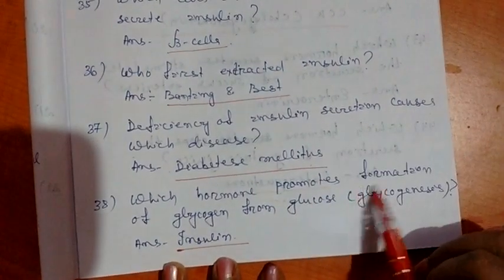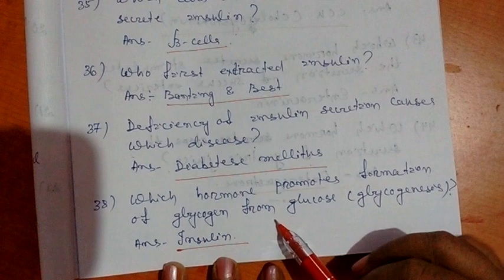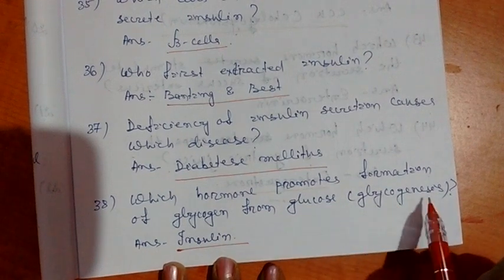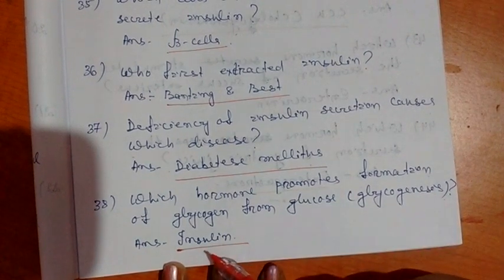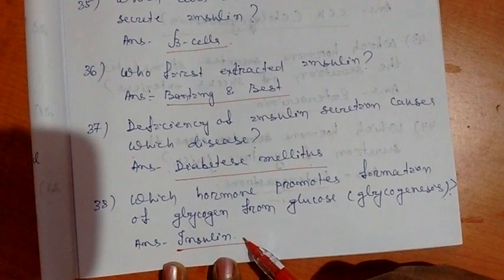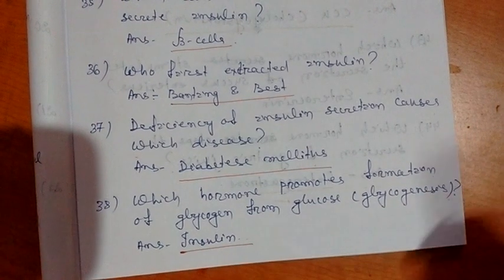Question 38. Which hormone promotes formation of glycogen from glucose, that is glycogenesis? Answer is insulin. Now come to next question.